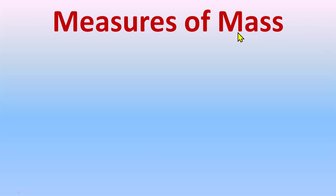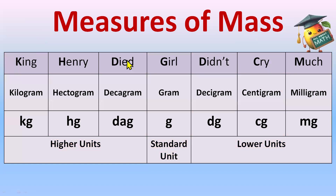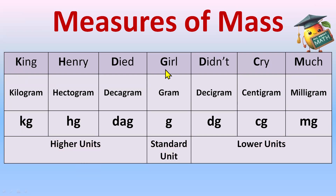For measures of mass, remember: 'King Henry Died Girl Didn't Cry Much.' Here we use 'girl' for gram instead of 'mother.' The units are kilogram, hectogram, decagram, gram, decigram, centigram, and milligram. These are the higher units, lower units, and the standard unit. So for mass, remember: 'girl' stands for gram.